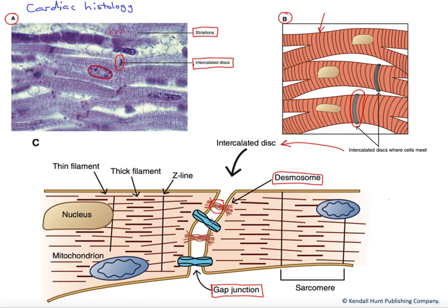The gap junctions, on the other hand, are not a mechanical connection. They're an electrical one, a communication connection. They're formed by a pore in each membrane that docks with the adjacent cell. This connects the cytoplasm of the adjacent cells. So if the cell on the left here were to depolarize due to an influx of cations, we could actually get current flow across the gap junction into the adjacent cell, depolarizing it, leading it to its threshold and opening of voltage-gated channels and generation of an action potential, and so on along a string of cardiomyocytes linked through these gap junctions.